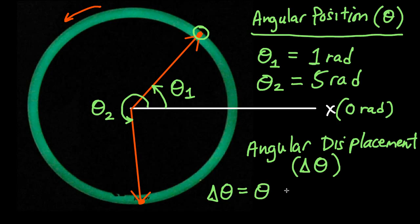...is equal to theta 2 minus theta 1. These symbols represent angular displacement equals angular position at position 2 minus angular position at position 1. So in this case we will have 5 radians minus 1 radian, which is 4 radians.